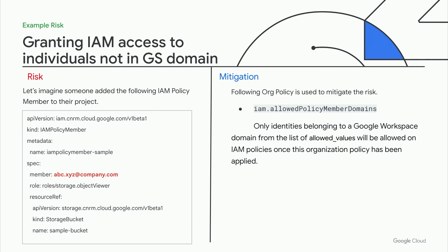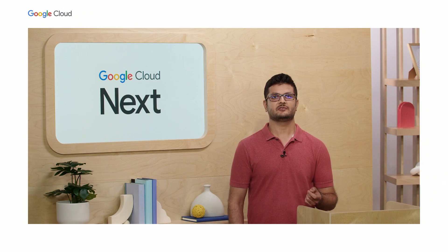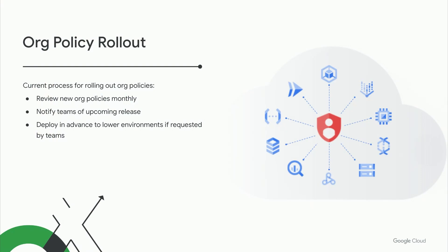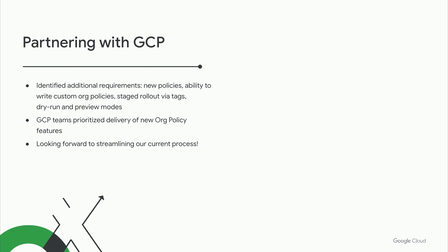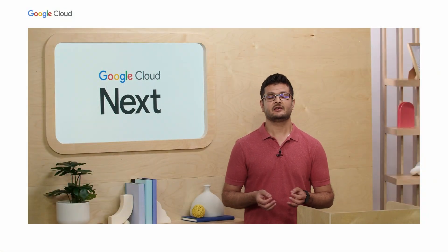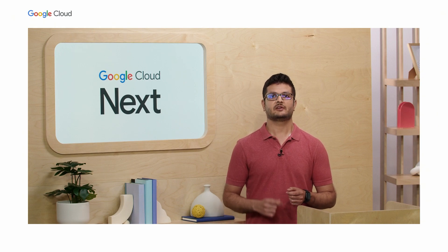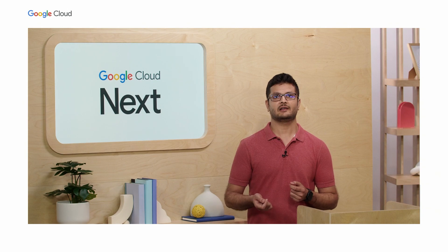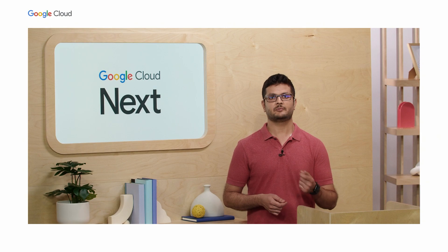We wanted to highlight our current process for deploying org policies and how several of the new org policy features Akshay mentioned will help us. Our current process is to review new org policies and assemble a set of policies to be released on a monthly basis, then work with teams on testing and rolling them out. While organization policies covered several of our compliance requirements, we did need some org policies and features not included in the default set. We have been able to partner with GCP teams to request new features that have since been implemented. At Goldman Sachs, we view our preventive security posture as a living thing — continuously updating our guardrails as we use new GCP services and as we encounter internal and industry-wide security findings.